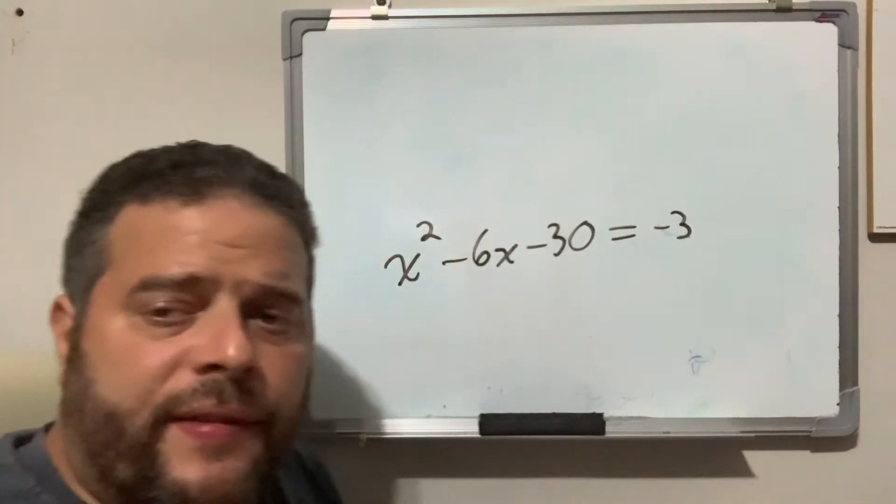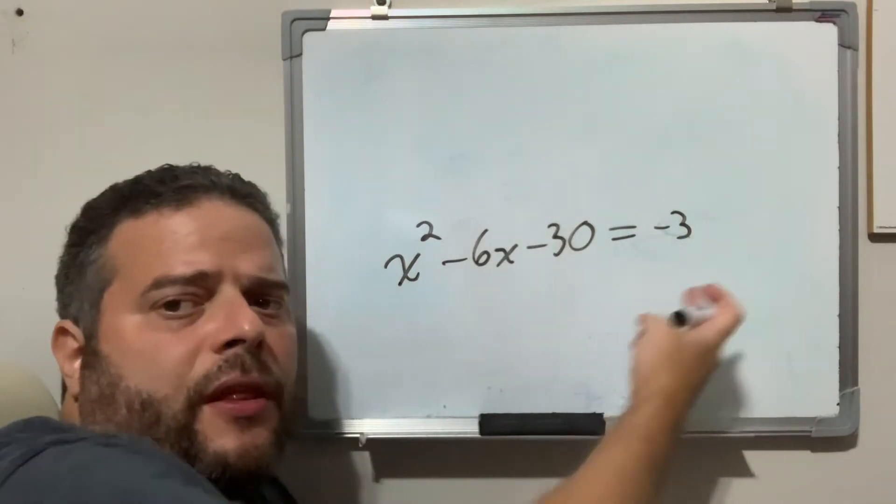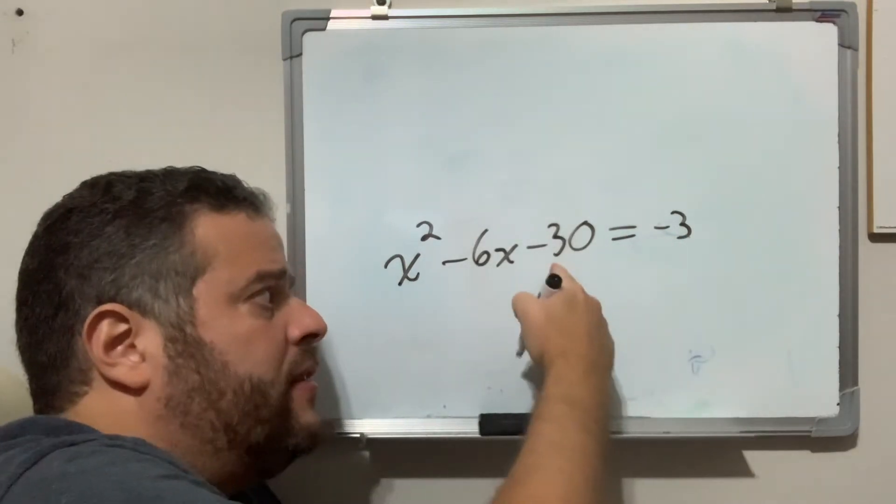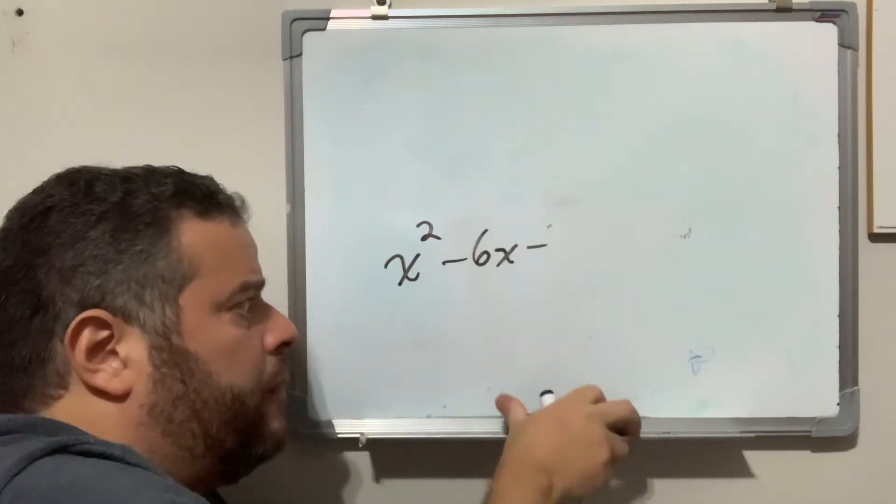It would be very simple, we isolate, or we don't isolate, we join our like terms, we send the 3 to the left hand side as positive 3, this turns into x² - 6x - 27 = 0.